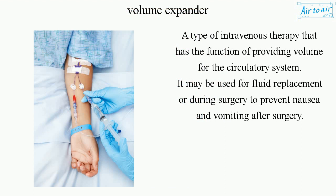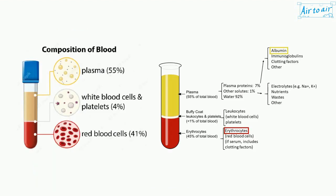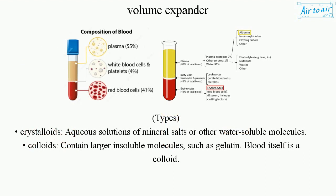Types: crystalloids are aqueous solutions of mineral salts or other water-soluble molecules. Colloids contain larger and soluble molecules such as gelatin. Blood itself is a colloid.